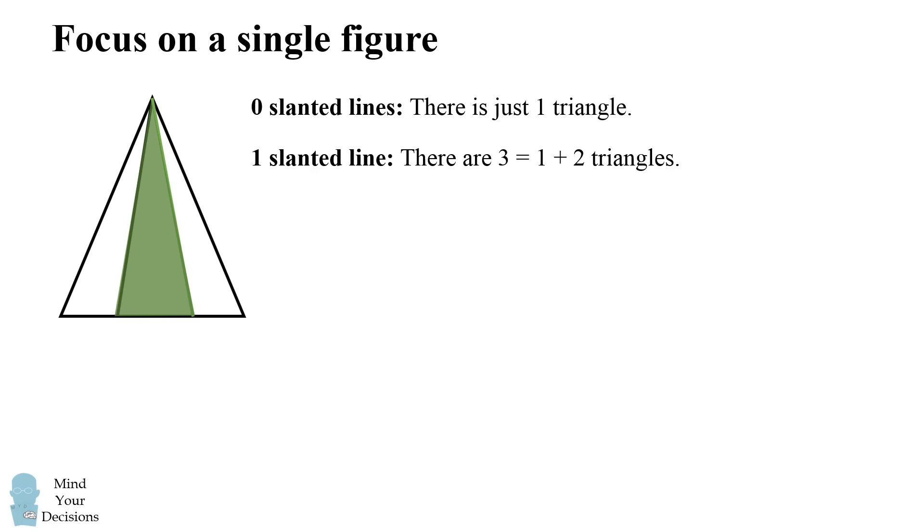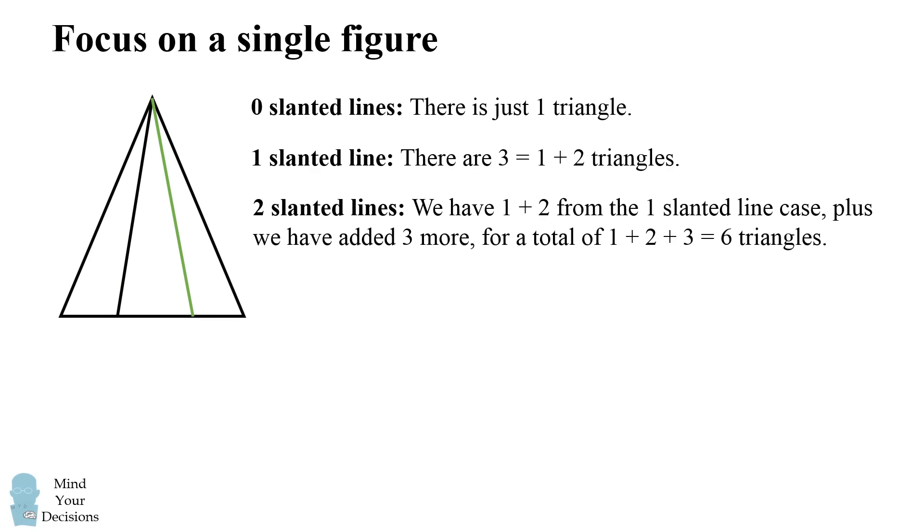We've created exactly three smaller triangles from this new line. So with two slanted lines on the interior, we have one plus two from the one slanted line case, plus we have added three more triangles for a total of one plus two plus three, which equals six total triangles.